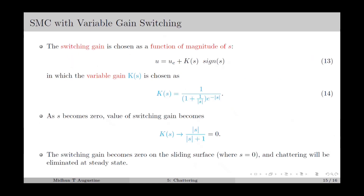The next approach is SMC with variable gain switching, in which the switching gain is selected as a function of the sliding variable as in equation number 13. K(S) is chosen as in equation number 14, where it depends on the magnitude of the sliding variable. As S becomes 0, K(S) also becomes 0, meaning the switching gain vanishes on the sliding surface and Chattering is eliminated at steady state. When the state deviates from the sliding surface, the magnitude of S increases and the switching gain also increases. Another approach for reducing Chattering is higher order sliding mode control, which will be discussed in the next lecture.